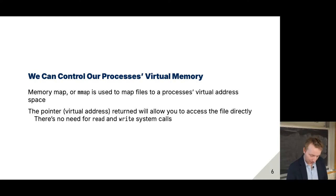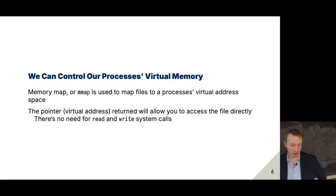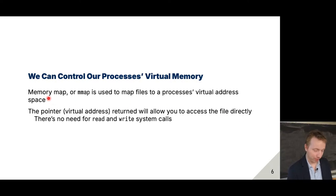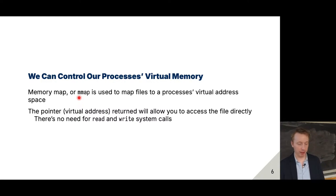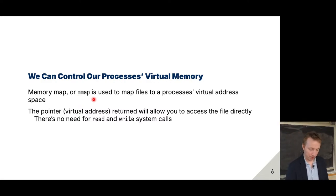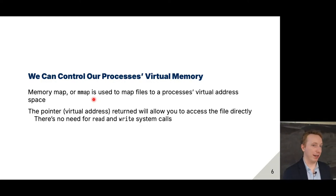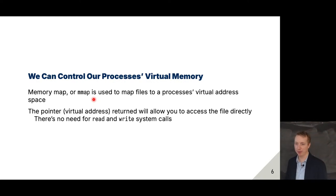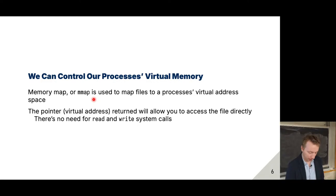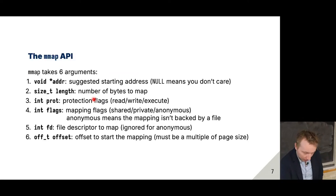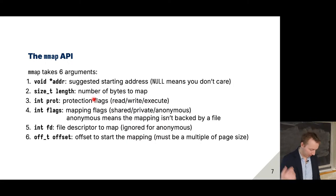Let's have fun with virtual memory. We can actually control our process's virtual memory using a cool system call called Memory Map — or mmap. It is used to map files to a process's virtual address space. Has anyone opened a file and had to do read system calls? It kind of sucks because you need to declare a buffer and all that stuff. mmap actually makes it a lot easier to read a file. Let's just go into an example.